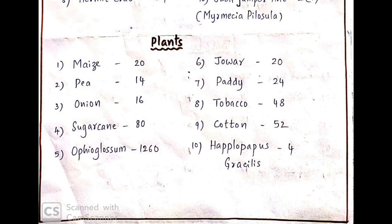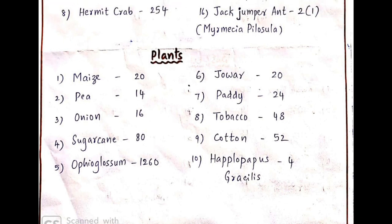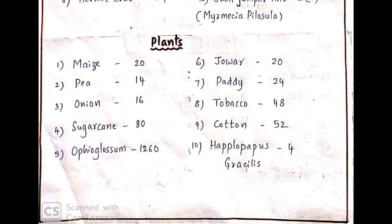Ophioglossum is the organism having the highest number of chromosomes among all organisms — whether plant or animal — with 1260 chromosomes. Jowar contains 20 chromosomes. Paddy contains 24 chromosomes. Tobacco has 48 chromosomes. Cotton has 52 chromosomes. Haplopappus gracilis contains only 4 chromosomes. This is an angiosperm, and among less-developed angiosperms, 6 kinds of plants share this same number of 4. This is a popular bit asked regularly in examinations.